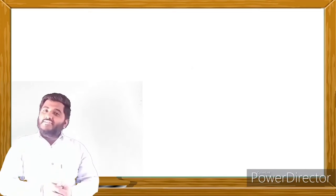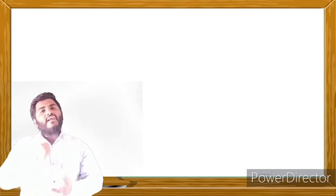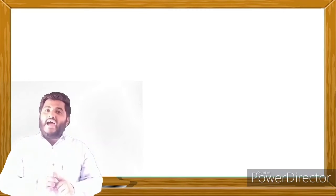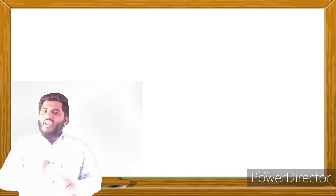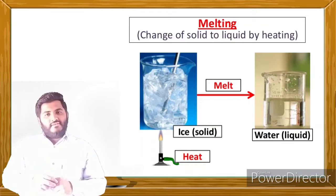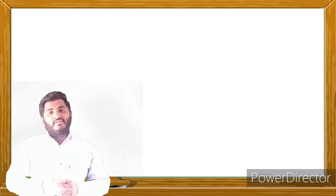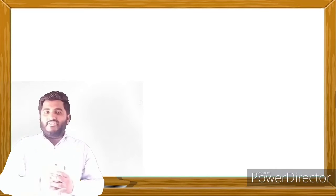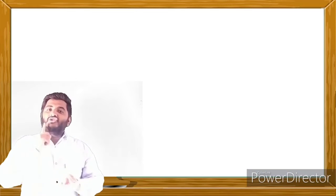Crystalline solids are also having a sharp melting point and boiling point. This means that at a particular temperature, they will melt or boil. This is because of the systematic arrangement and definite geometrical shape — they melt or boil at a specific temperature. That is called sharp melting point or boiling point.